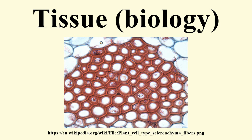Colenchyma is a living tissue of the primary body like parenchyma. Cells are thin-walled but possess thickening of cellulose, water, and pectin substances at the corners where cells join together. This tissue gives tensile strength to the plant; the cells are compactly arranged with very little intercellular spaces. It occurs chiefly in the hypodermis of stems and leaves, and is absent in monocots and in roots. Colenchyma acts as supporting tissue in stems of young plants, provides mechanical support, elasticity, and tensile strength, and helps in manufacturing sugar and storing it as starch.